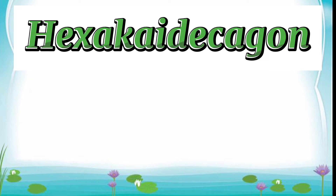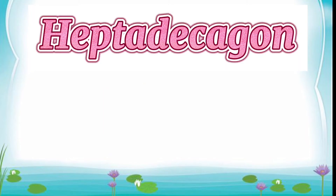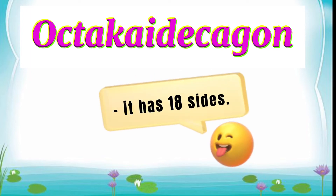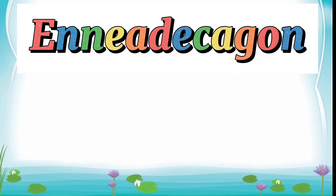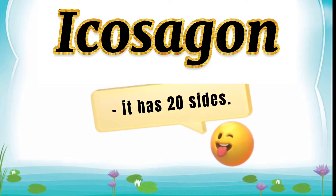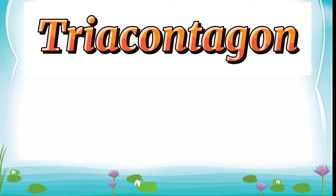Hexacodecagon — it has sixteen sides. Heptadecagon — it has seventeen sides. Octacodecagon — it has eighteen sides. Eniadecagon — it has nineteen sides. Icosagon — it has twenty sides. Triacontagon — it has thirty sides.